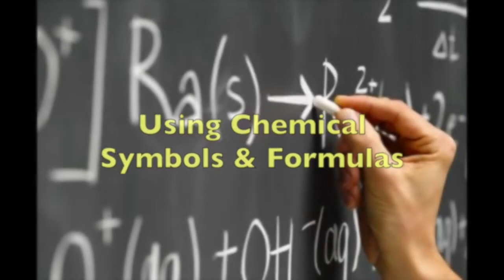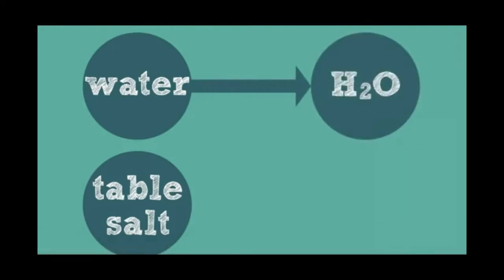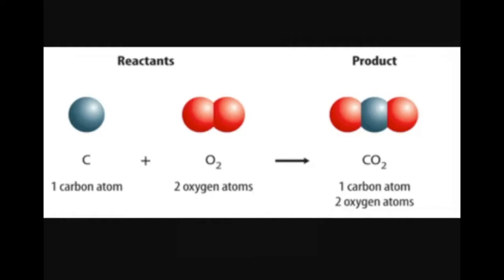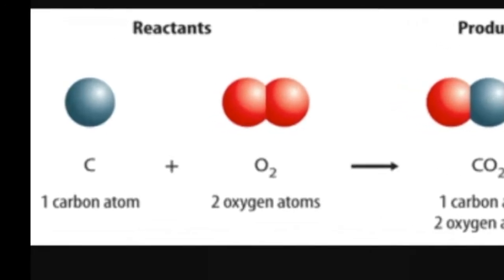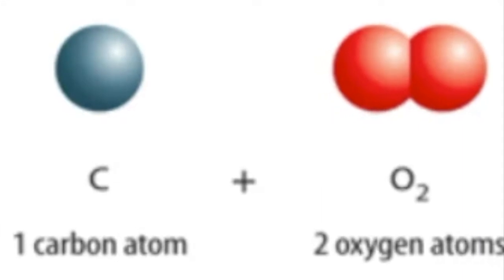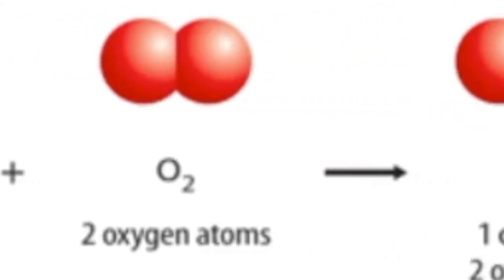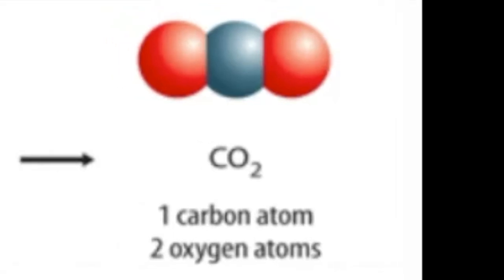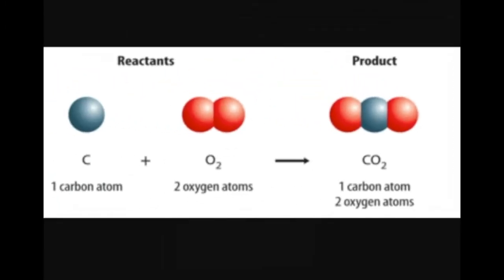When scientists write chemical equations, they use chemical symbols and formulas instead of names to represent reactants and products. In the reaction where carbon reacts with oxygen to produce carbon dioxide: carbon is represented by the symbol C; oxygen exists as a diatomic molecule represented by O2; and carbon dioxide — consisting of one carbon atom and two oxygen atoms — is represented by CO2. The chemical equation is: C + O2 yields CO2.